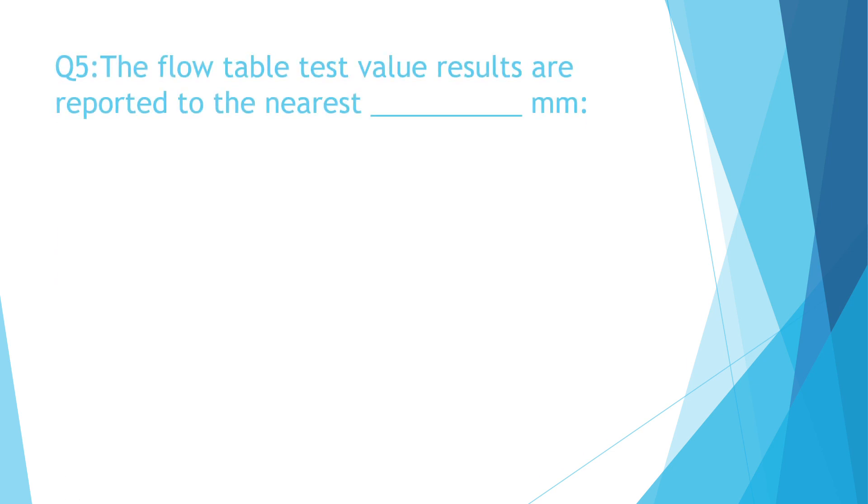Question number five. The flow table test value results are reported to the nearest. A. 10 mm. B. 20 mm. C. 5 mm. D. None of the above.